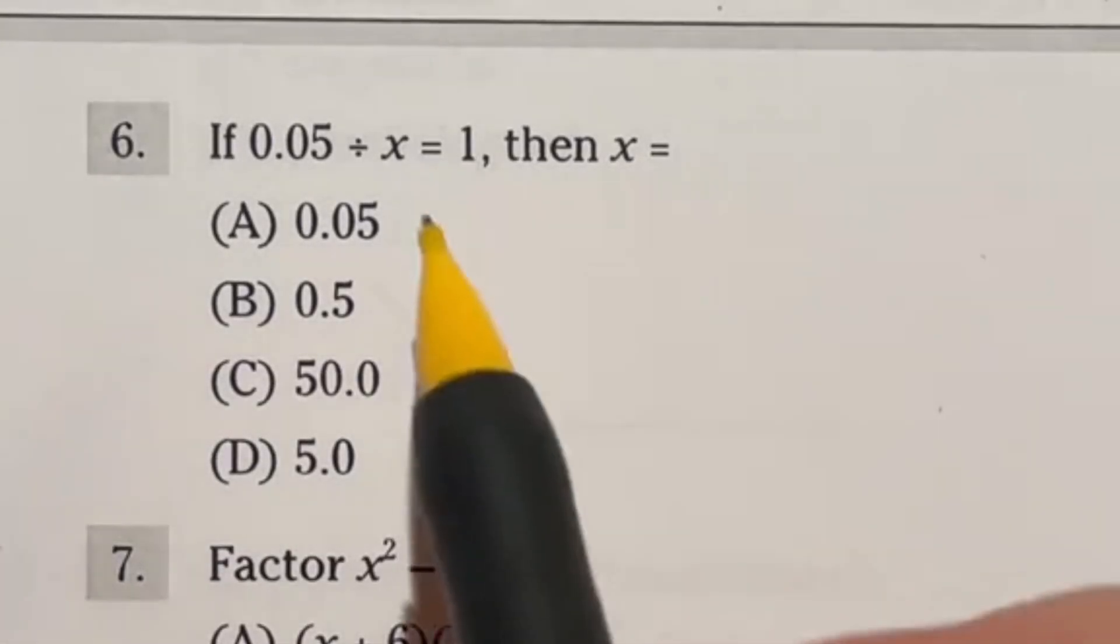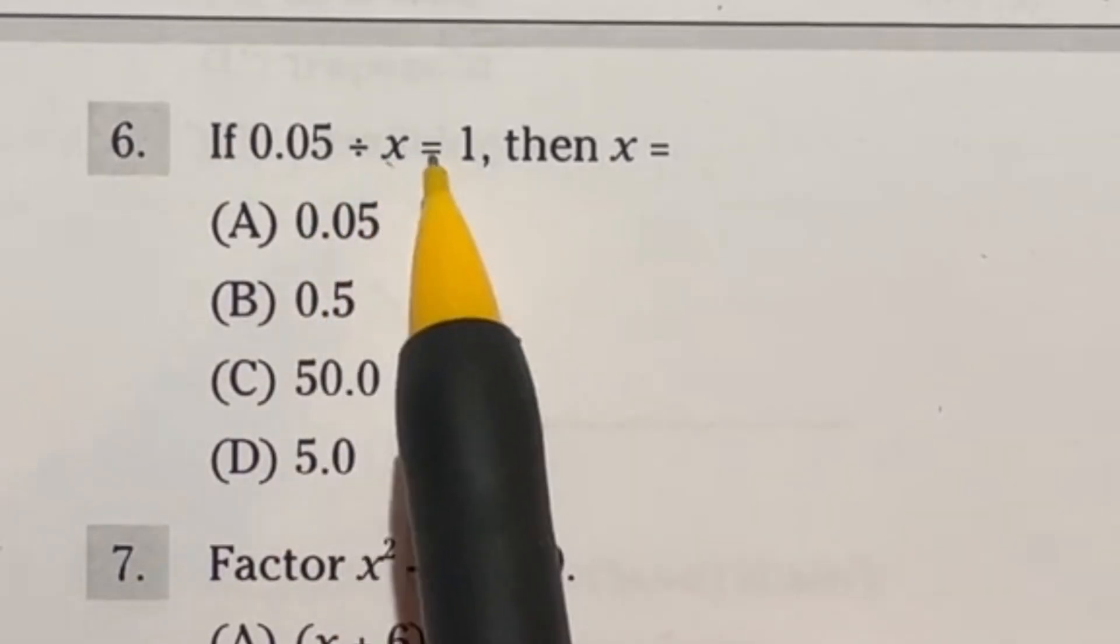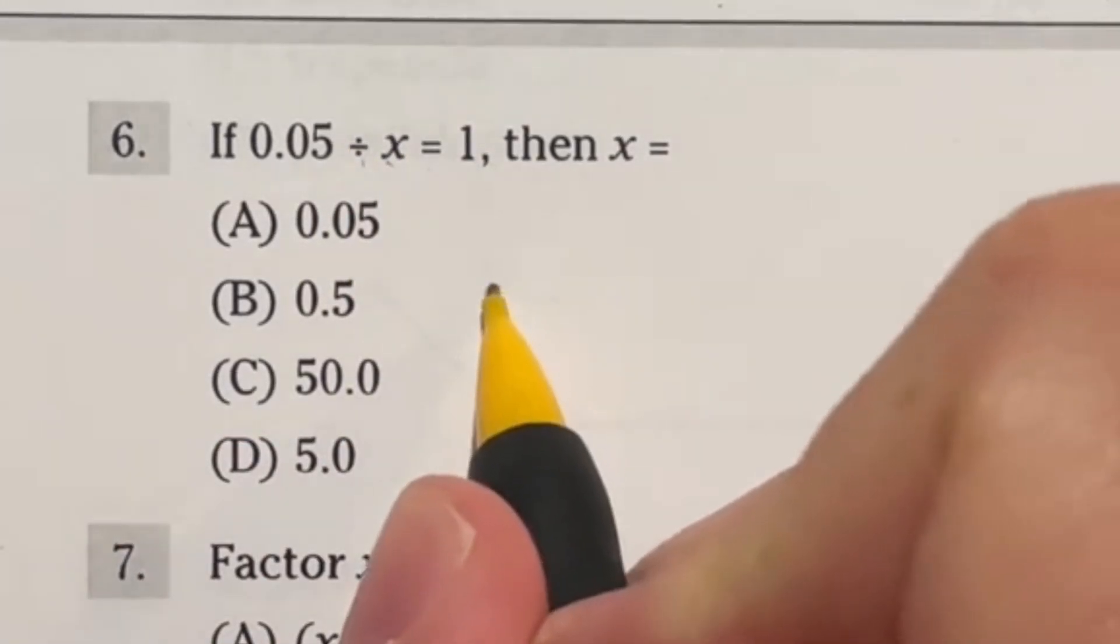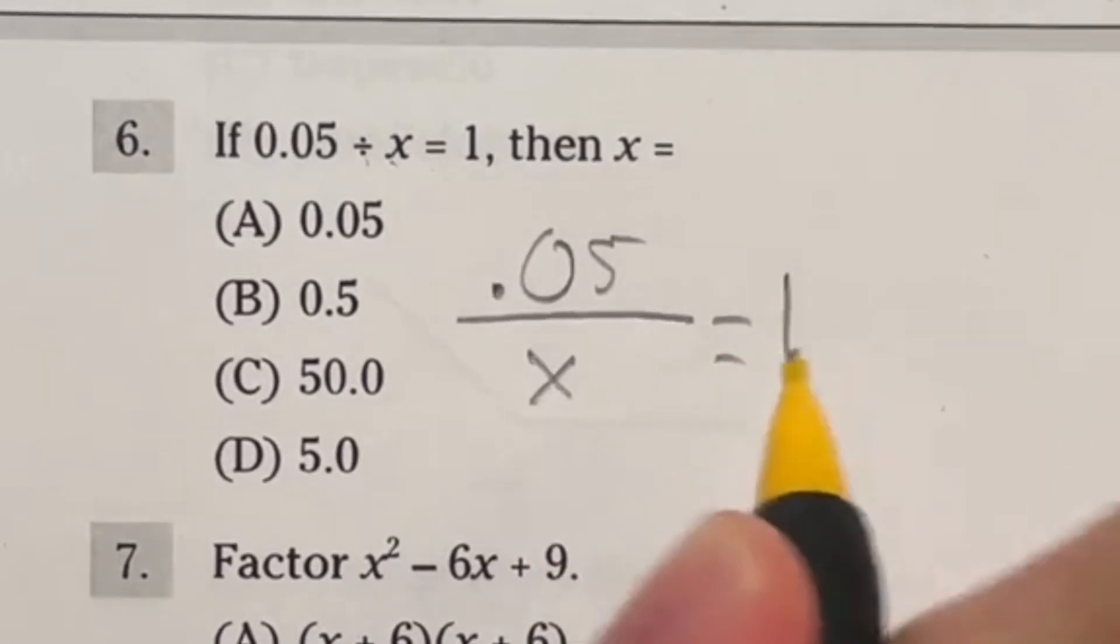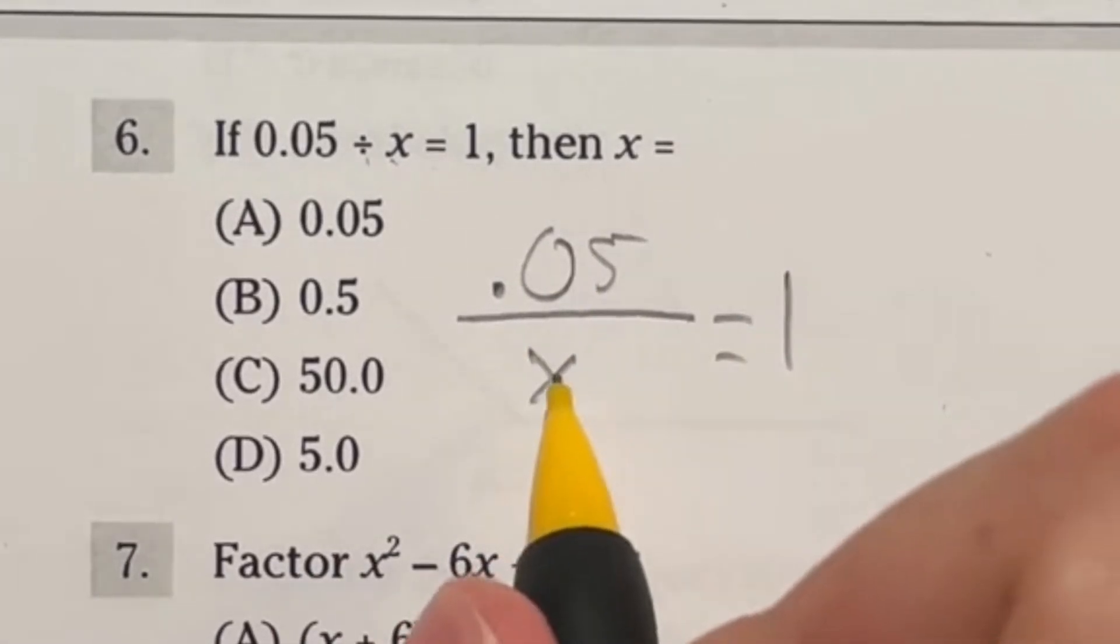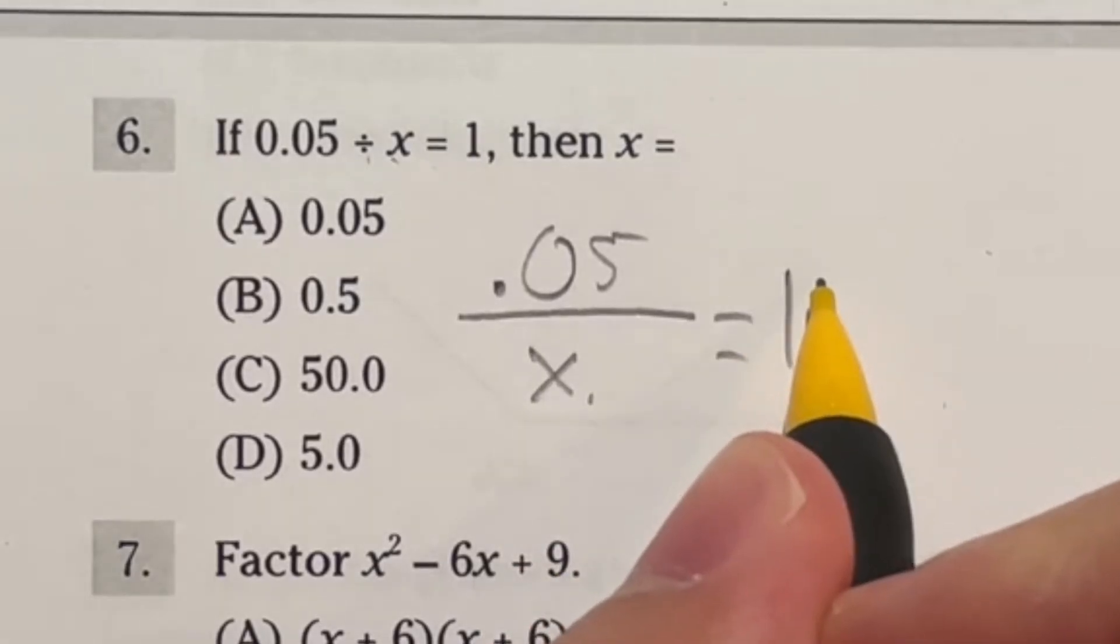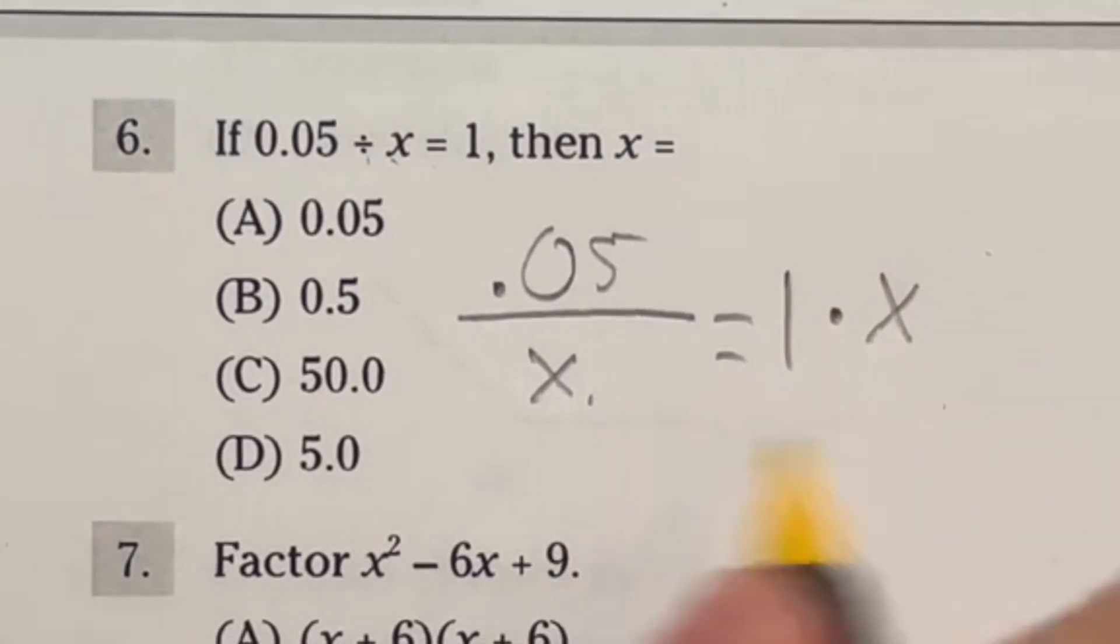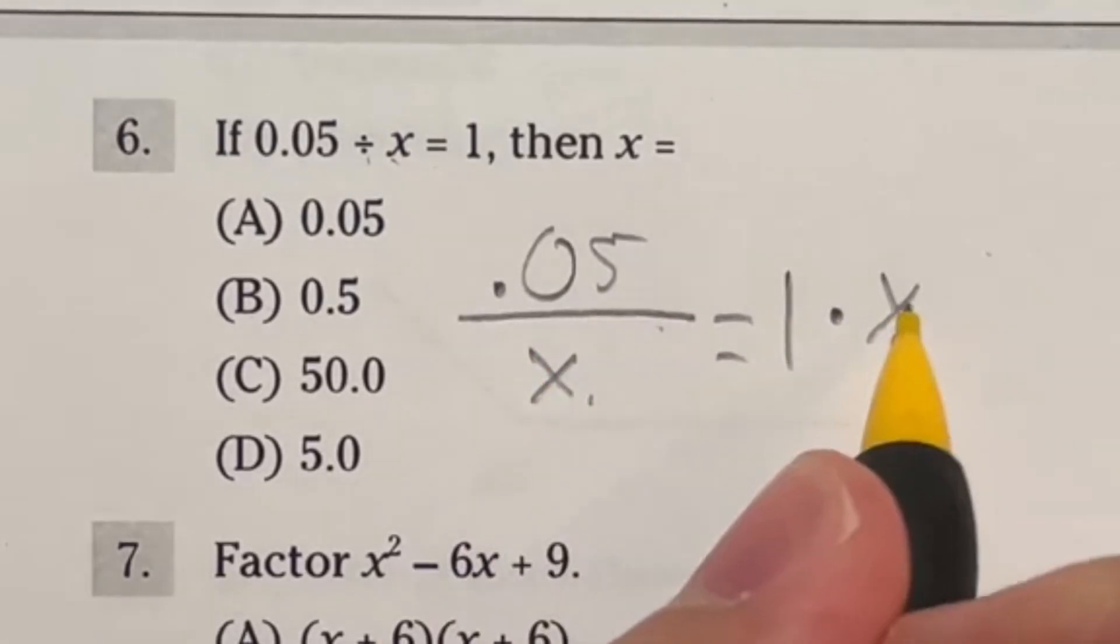Number six on the ASVAB mathematics knowledge, we're looking at 0.05 divided by x is equal to one. So if I rewrote this instead of using this division symbol, we would have 0.05 divided by x is equal to one. Now there's lots of different ways you can do this, but I essentially want to get x by itself. So I'm going to move x over to this side.